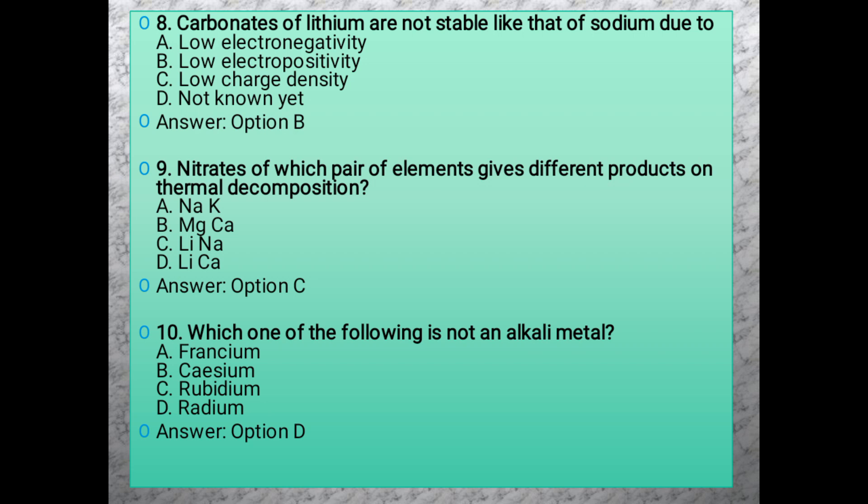Question 10: Which one of the following is not an alkali metal? The answer is radium, option D. Radium is a second A group element and is a radioactive element, so it is not an alkali metal. Francium, cesium, and rubidium are first A group alkali metals. I will upload more alkaline metal content in the next video.